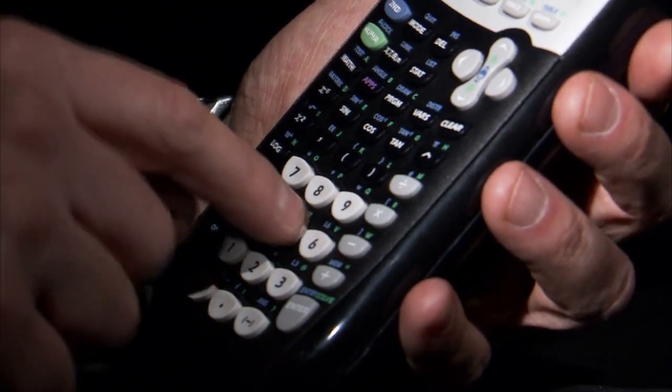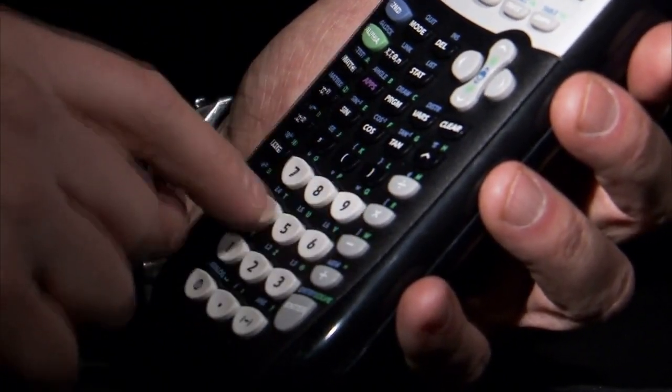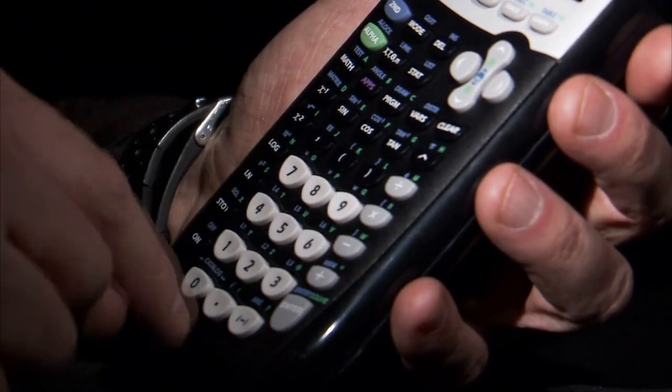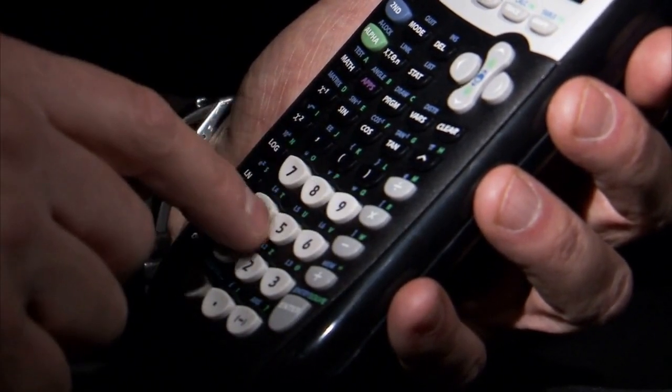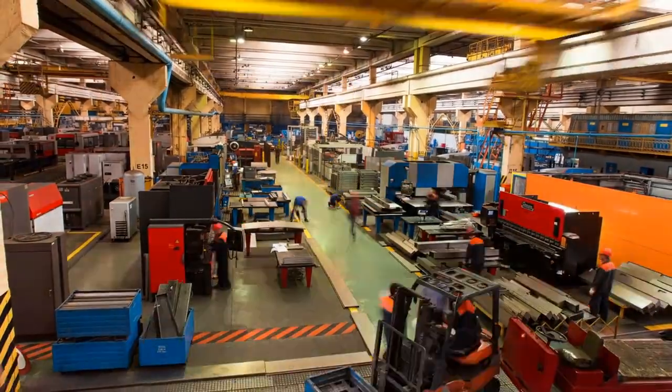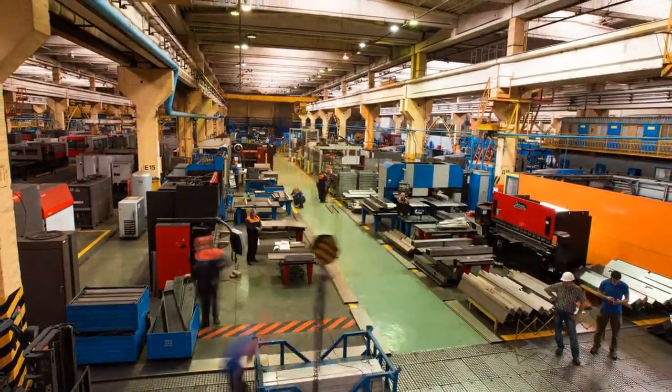For instance, scientific calculators have more complex designs with a larger number of buttons, while basic calculators have simpler designs with fewer buttons. Once the design is complete, it is sent to the next stage of the manufacturing process.